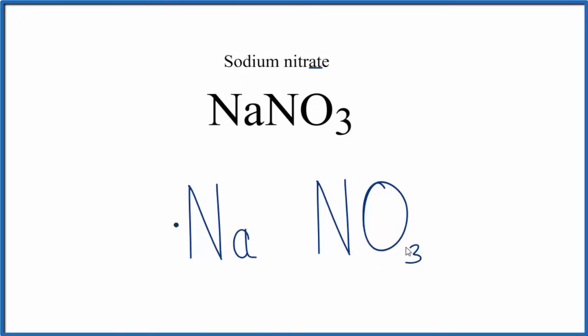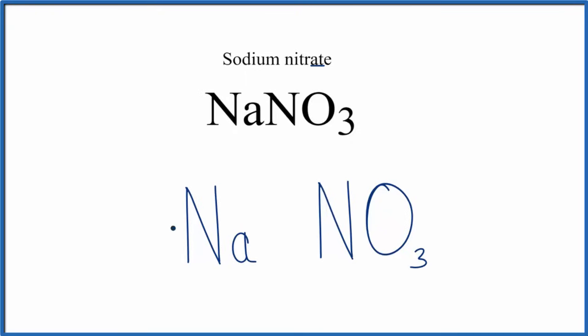Because the N and the O are nonmetals and it's tightly bound together, we need to do a Lewis structure just for NO3, a nitrate ion. We'll replace the NO3 with a Lewis structure. You can check in the description for the video for a link on how to draw the nitrate Lewis structure.